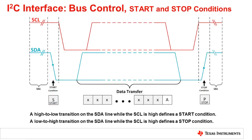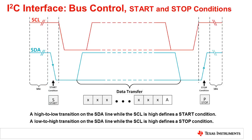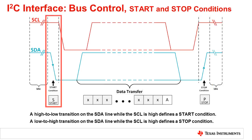I2C communication with the device is initiated by the master sending a start condition, and is terminated by the master sending a stop condition. A high-to-low transition on the SDA line while the SCL is high defines a start condition.